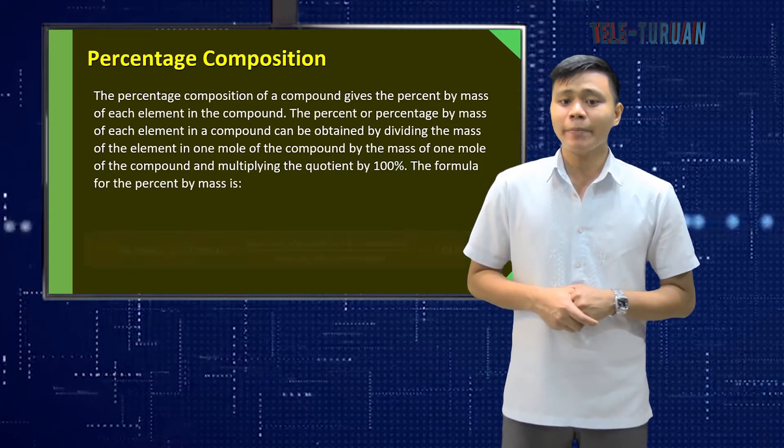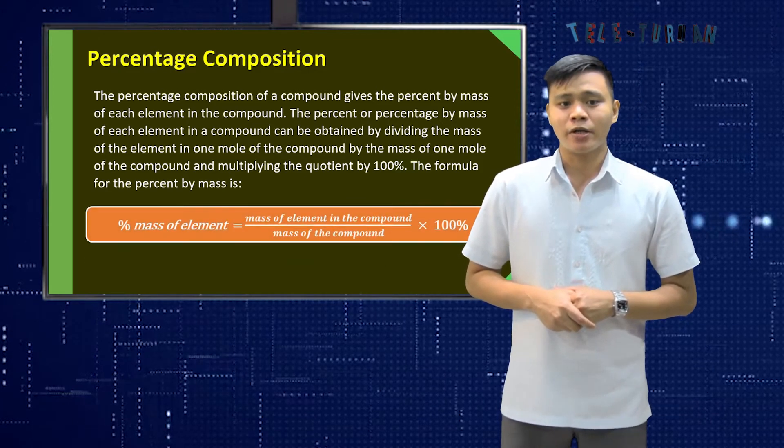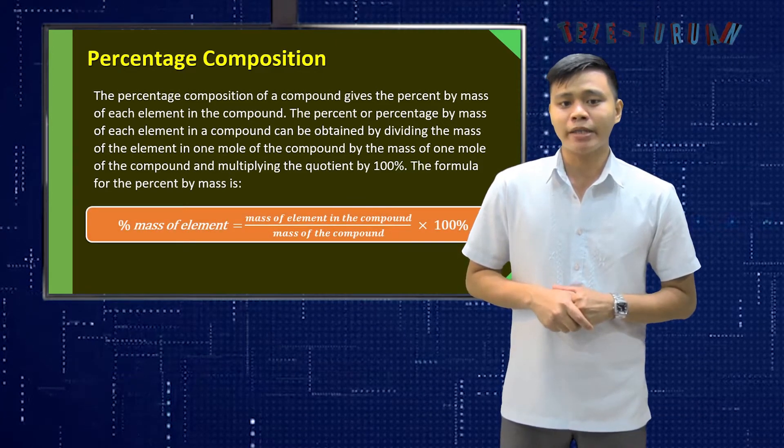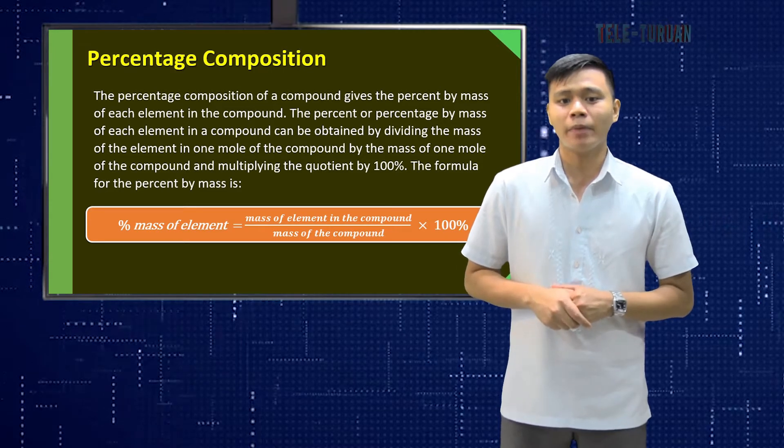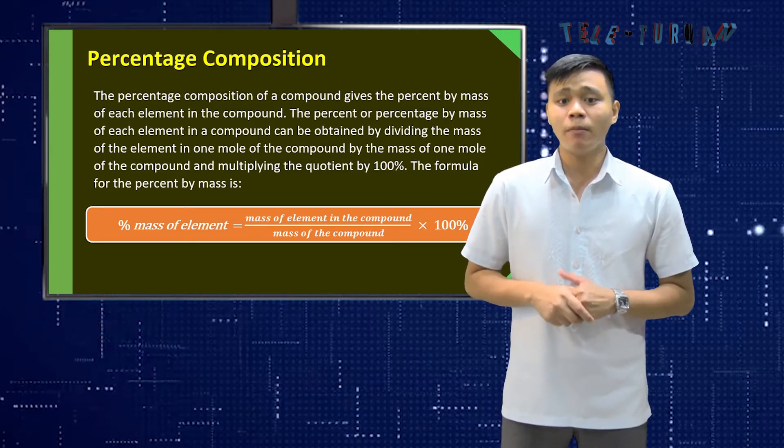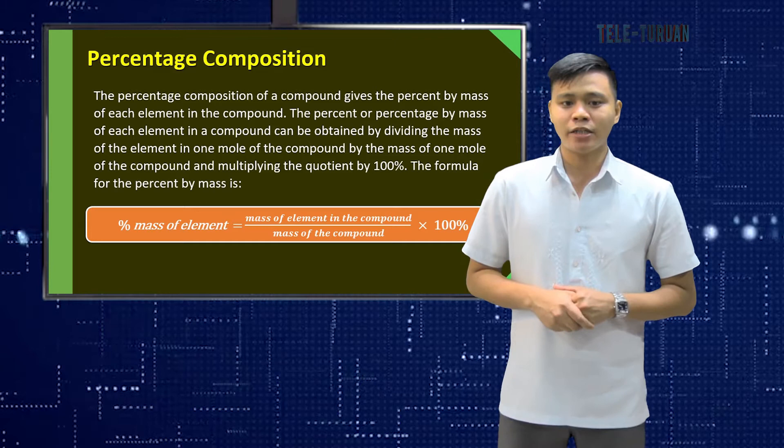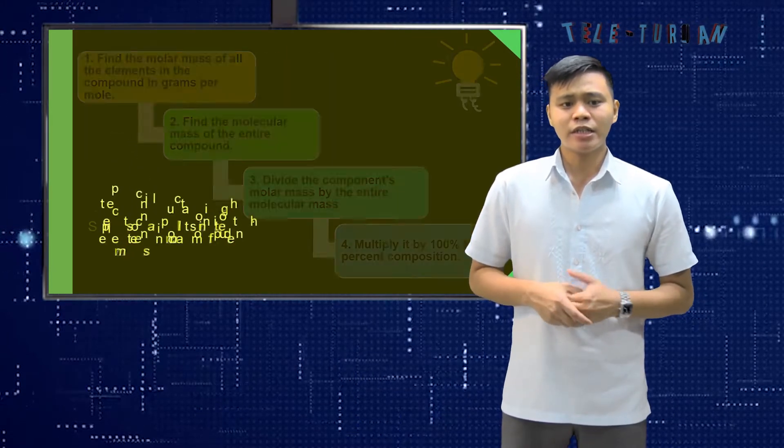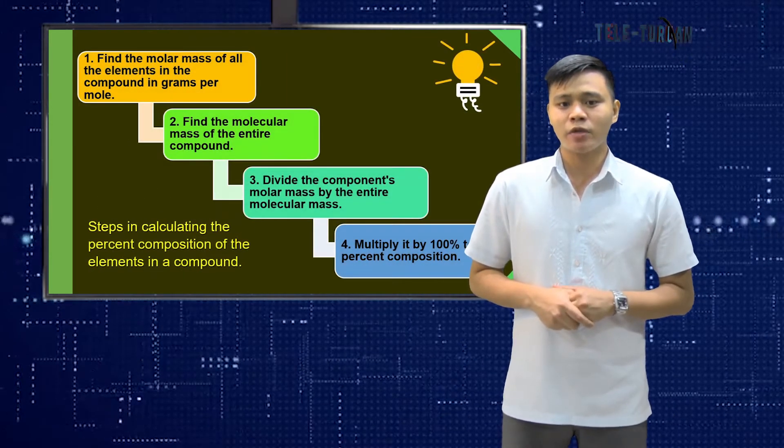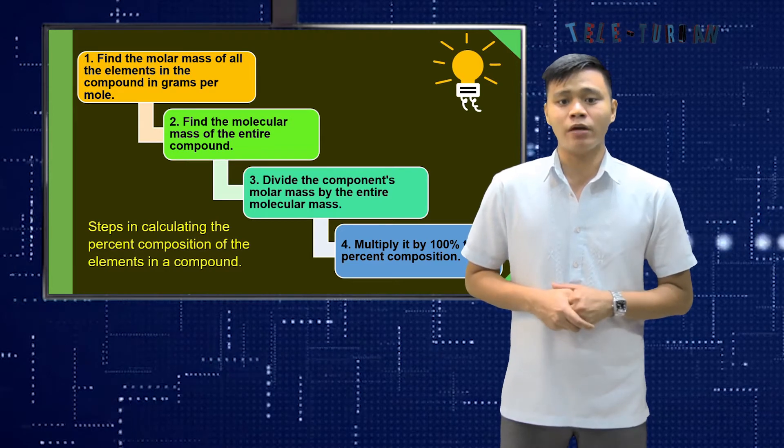the formula for the percent by mass is percent by mass of element is equal to mass of element in the compound divided by the mass of the compound multiplied by 100%. Here are the steps in calculating the percent composition of the elements in a compound.